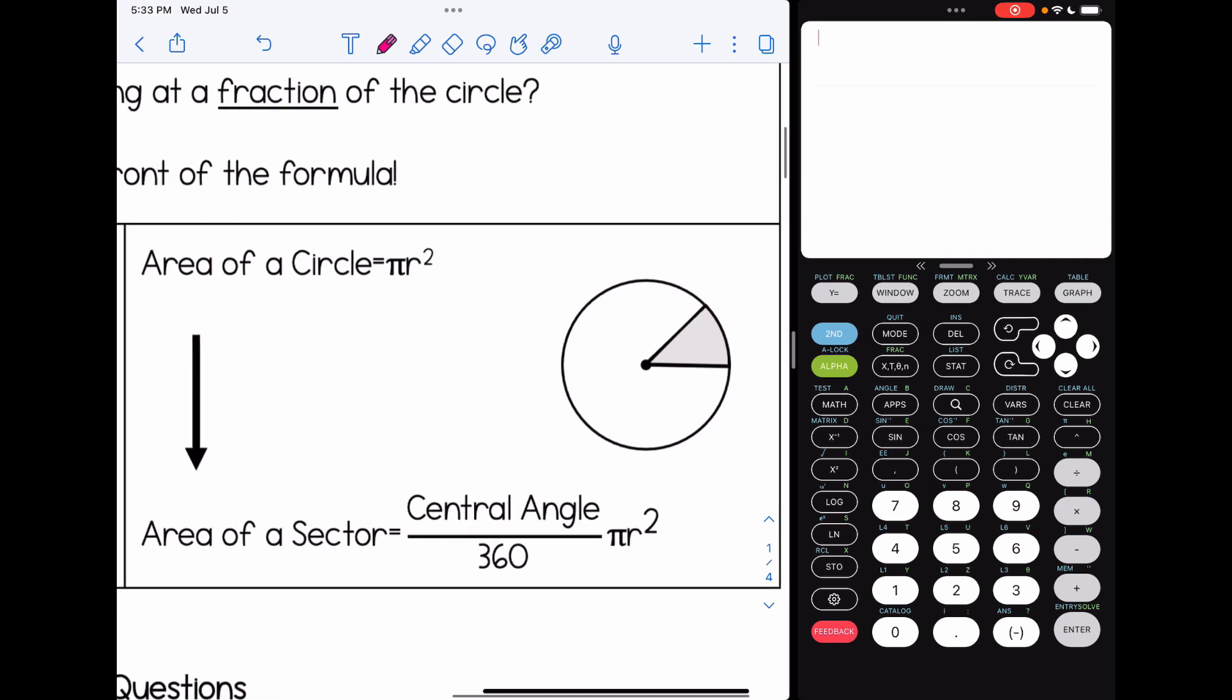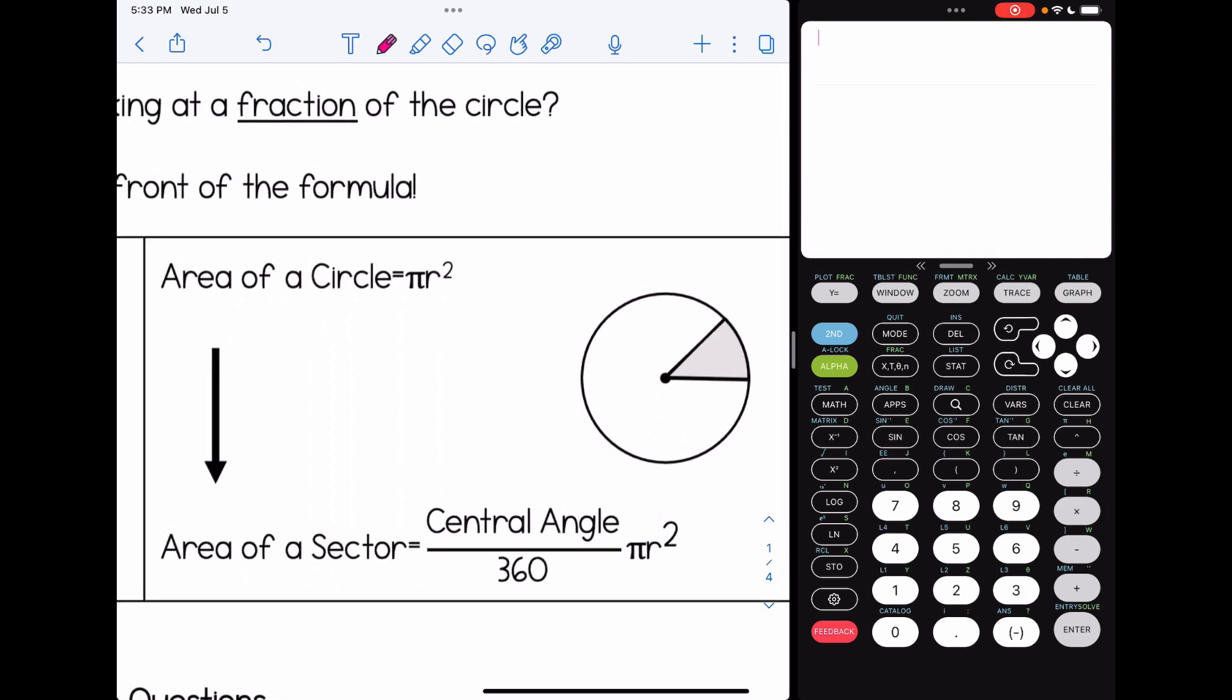Very similarly, let's say I only wanted the area of this shaded sector. Well, area of a circle is πr², but I only want a fraction of the circle's area, so I add a fraction in front of the formula. So central angle over 360 πr². I should note here too that there are different ways that you could calculate arc length or area of a sector, perhaps using proportions, but in this video I'm going to be covering this method only.